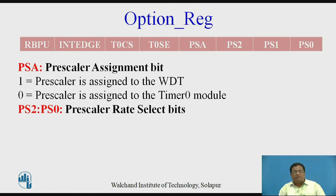The PSA bit is called the pre-scaler assignment bit. In PIC16F877, the same pre-scaler can be assigned either to Timer 0 or to the watchdog timer. If the PSA bit is set, the pre-scaler is assigned to the watchdog timer. To assign the pre-scaler to Timer 0, reset the PSA bit. This pre-scaler is mainly used to get a greater amount of delay. PS2 to PS0 are the pre-scaler rate select bits.